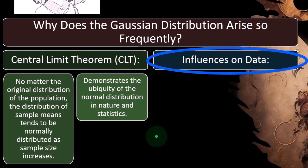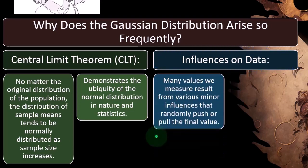Influences on data. You might also think of it, this is kind of more of an intuitive way to think of certain scenarios and why they might conform to a bell curve. So many values we measure result from various minor influences.